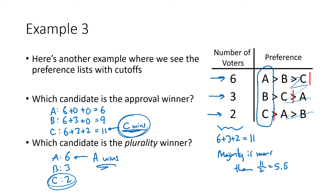It doesn't conflict with any of our formal fairness criteria, but it does illustrate that the approval winner can be vastly different from the winner using our other methods.